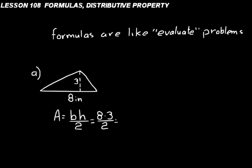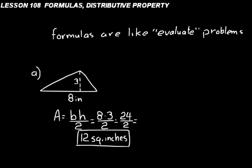Now let's evaluate that expression. We say 8 times 3 is 24, divided by 2. So now we just do 24 divided by 2 — that's splitting 24 in half — so that would be 12. We write that down as 12 square inches. 12 square inches is the area of that triangle.